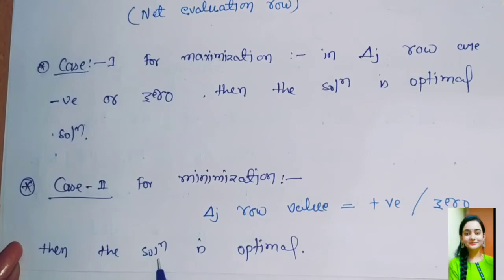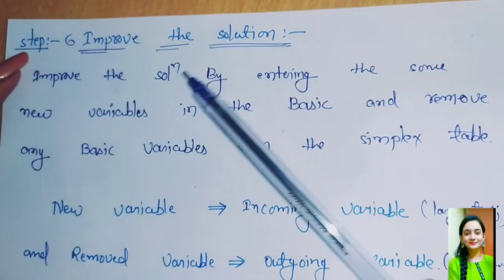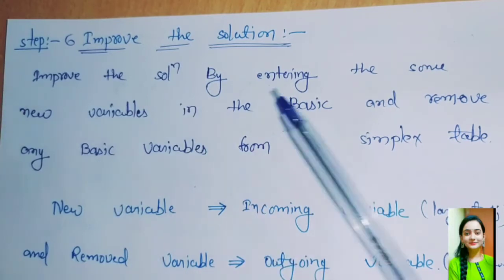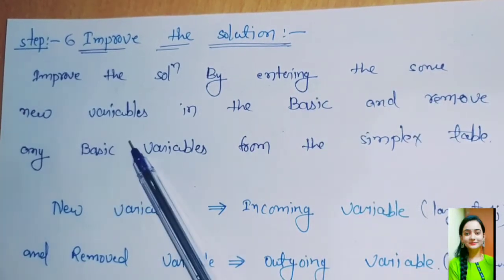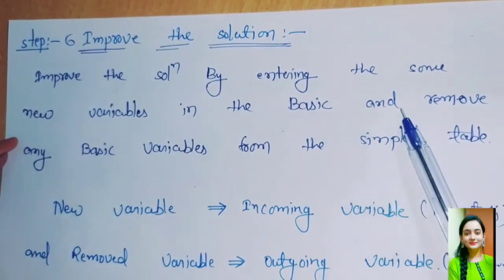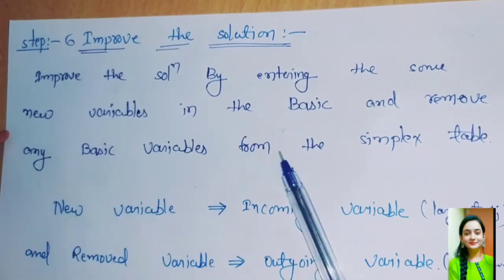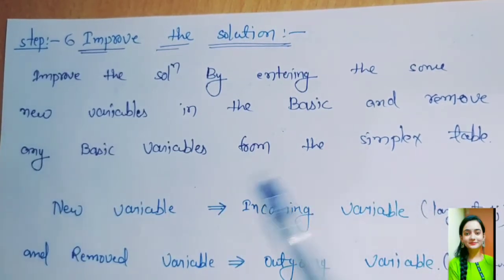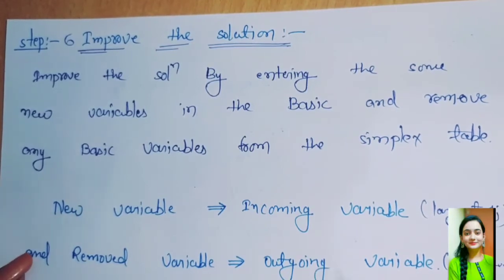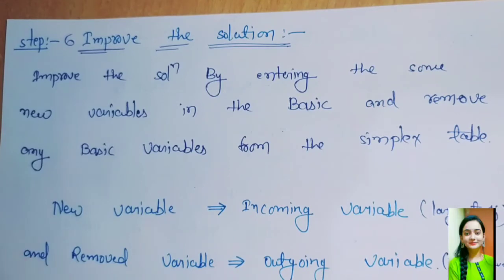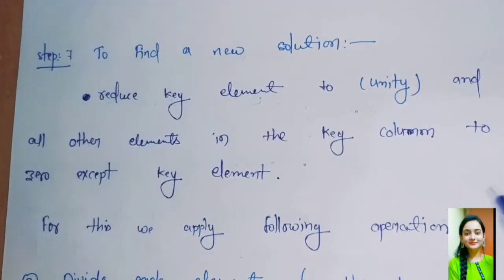Step 6: Improve the solution. Improve the solution by entering some new variable in the basic variable and remove any basic variable from the simplex table. The new variable is called incoming variable, which has the largest delta j value, and the removed variable is called outgoing variable, which has the minimum positive value.